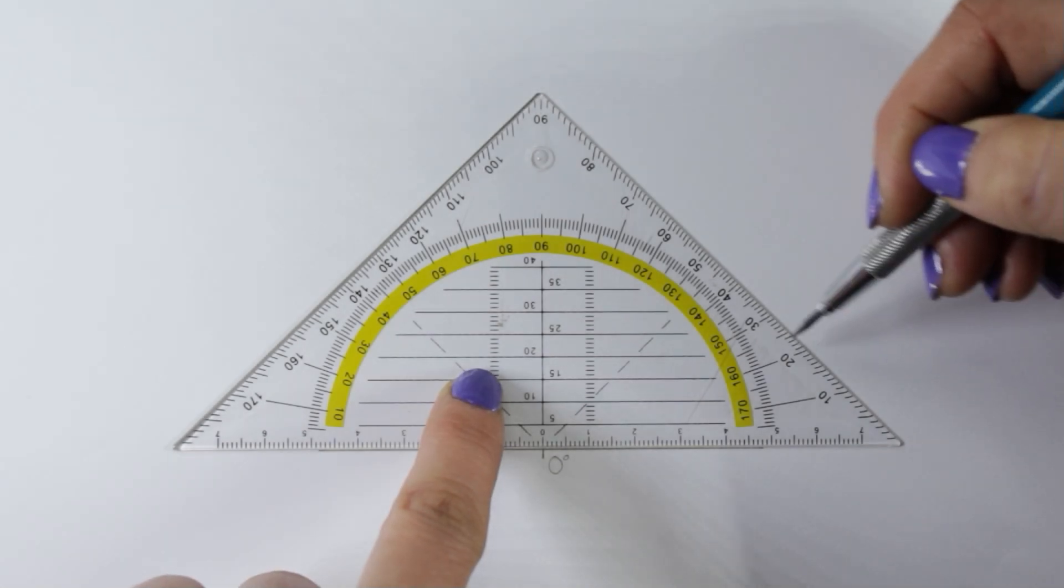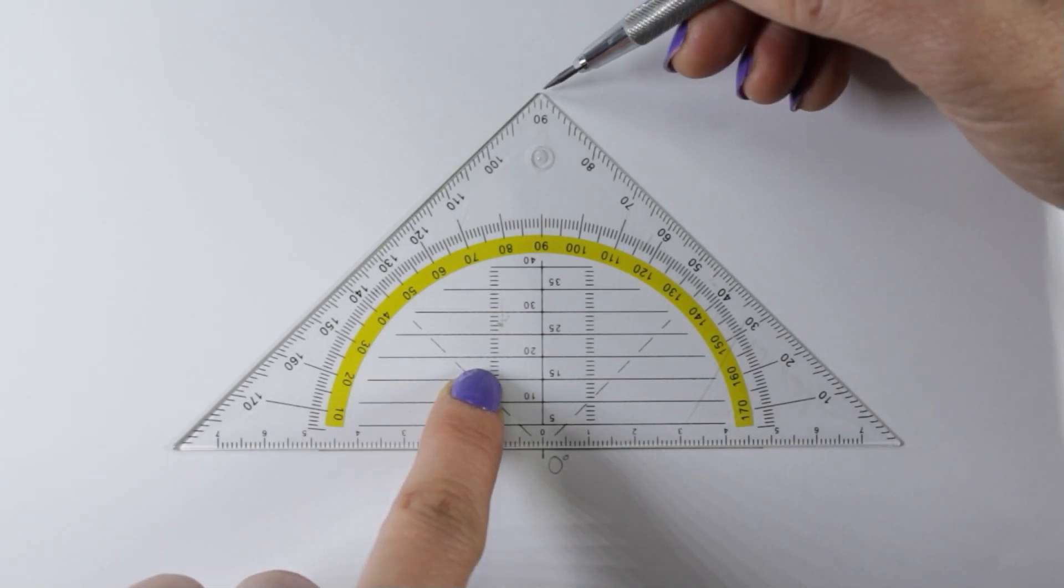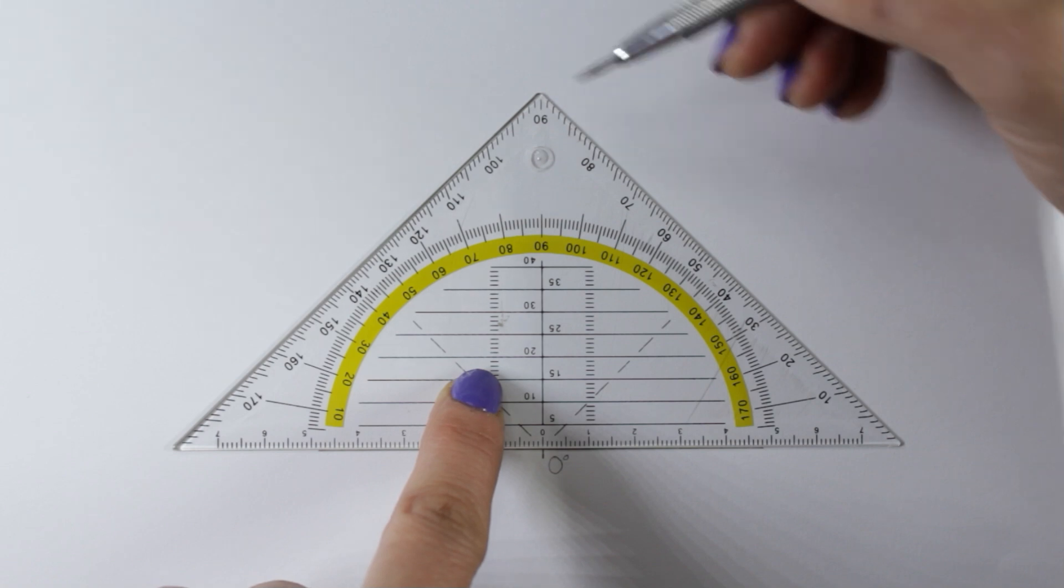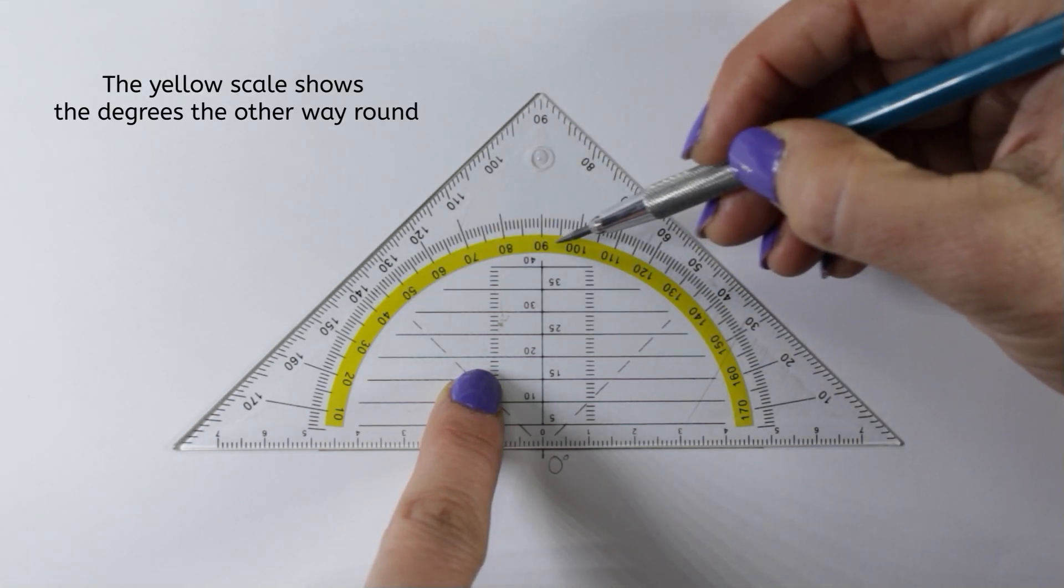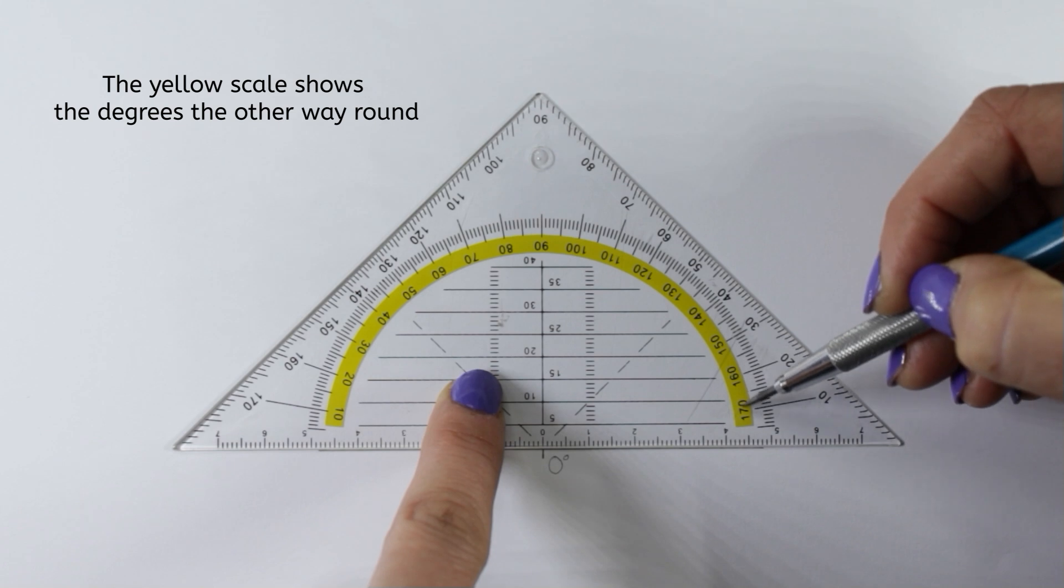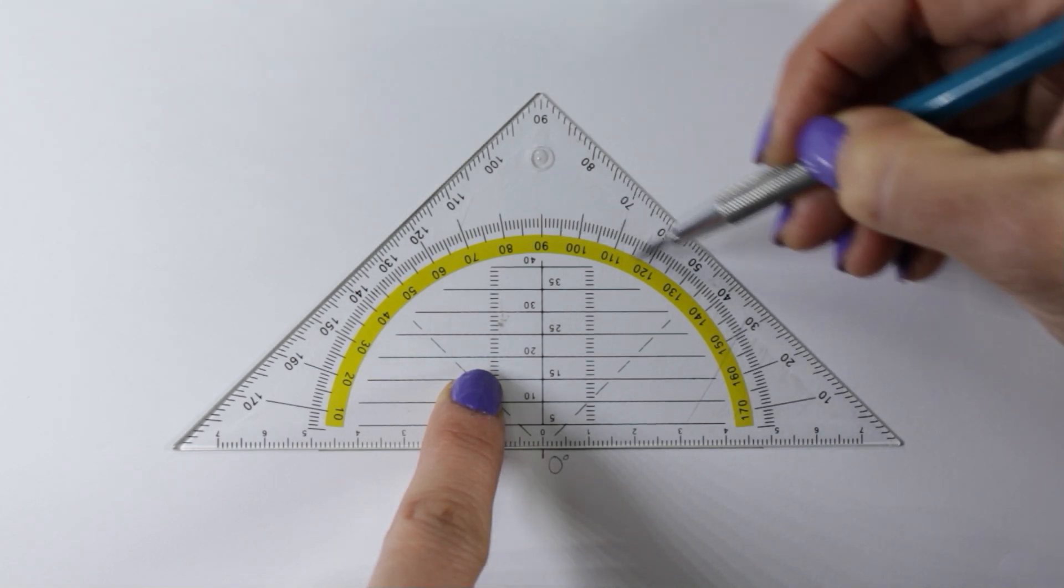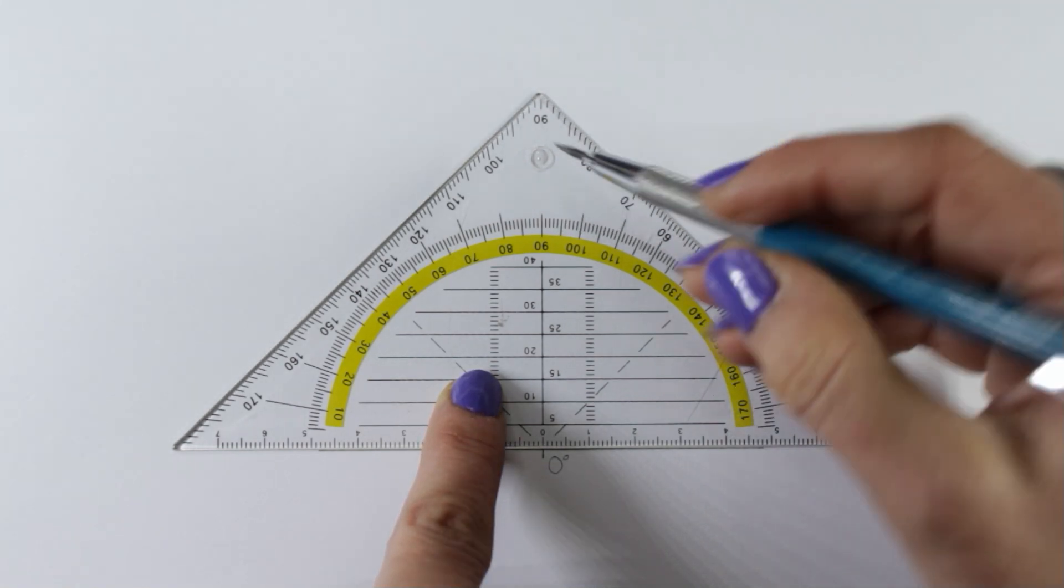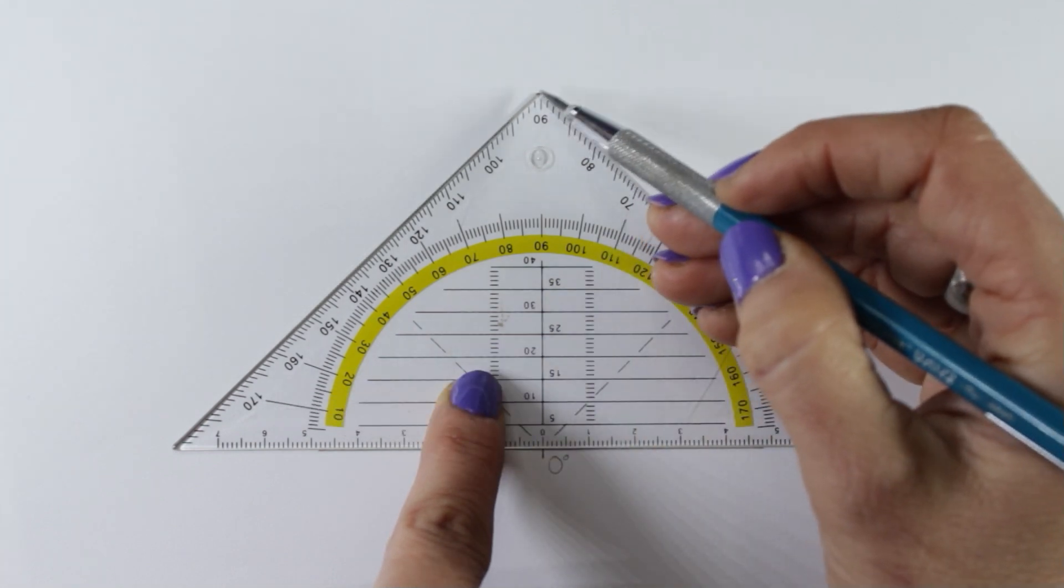On this side of the triangle, you can find the degrees from 0 to 90. On the other side, from 90 to 180.